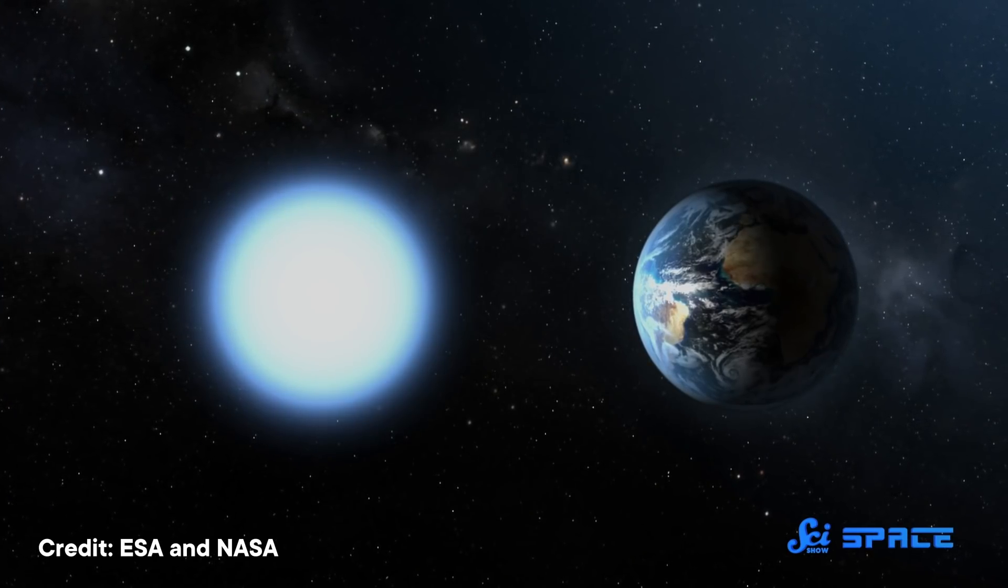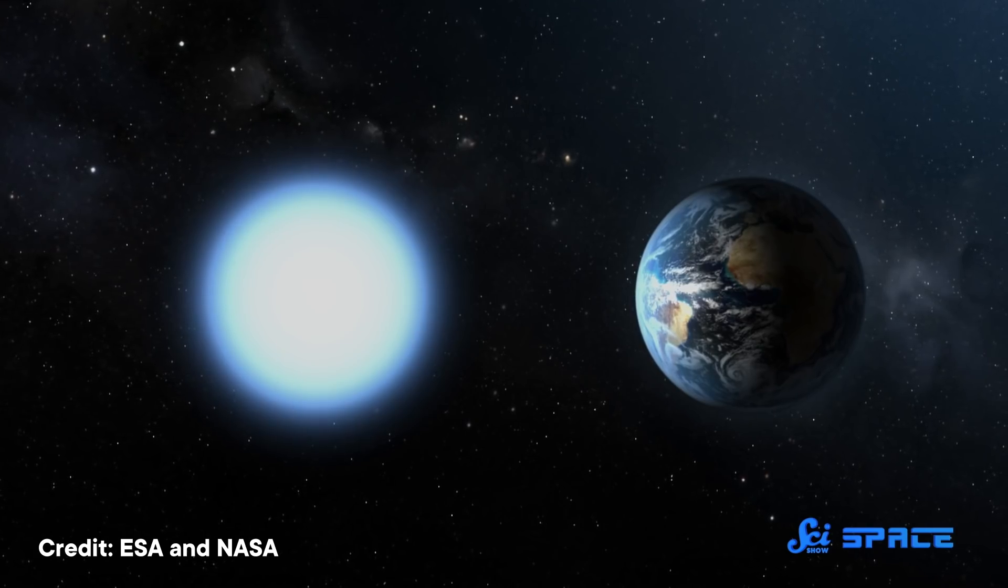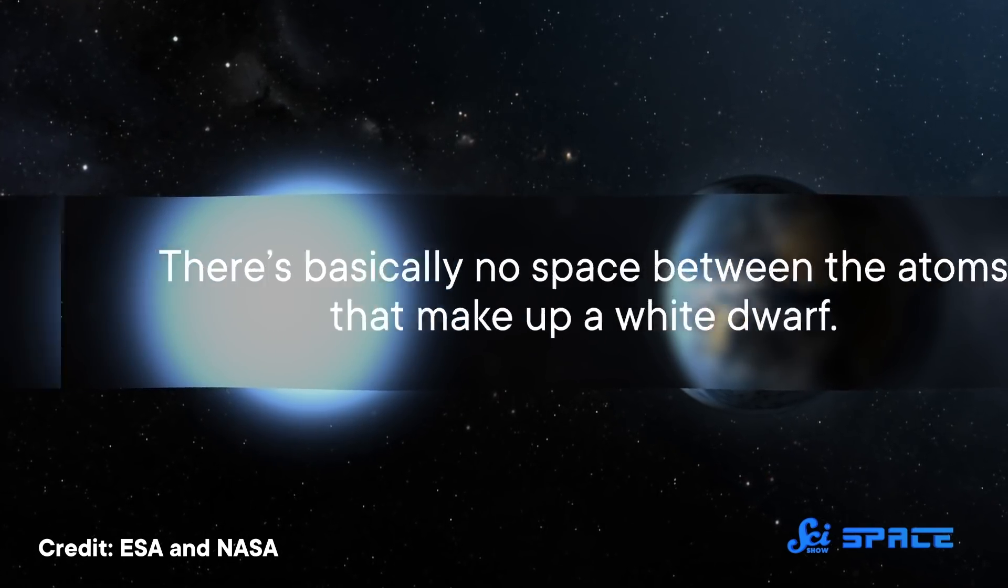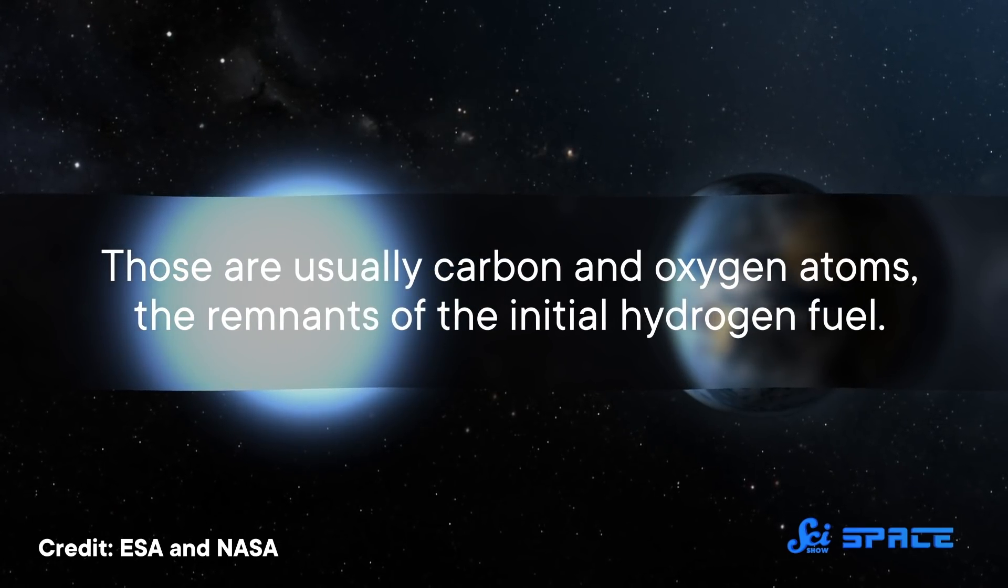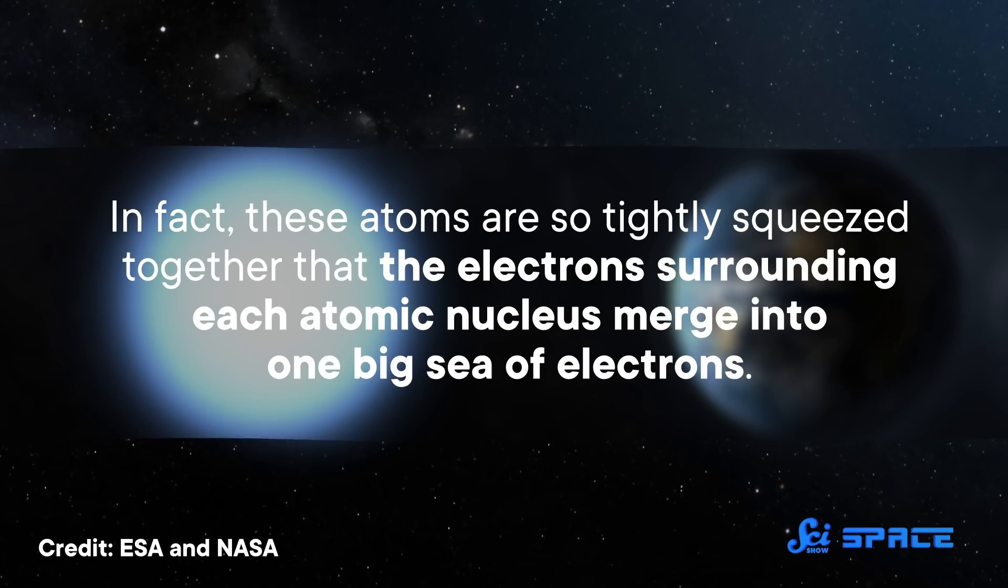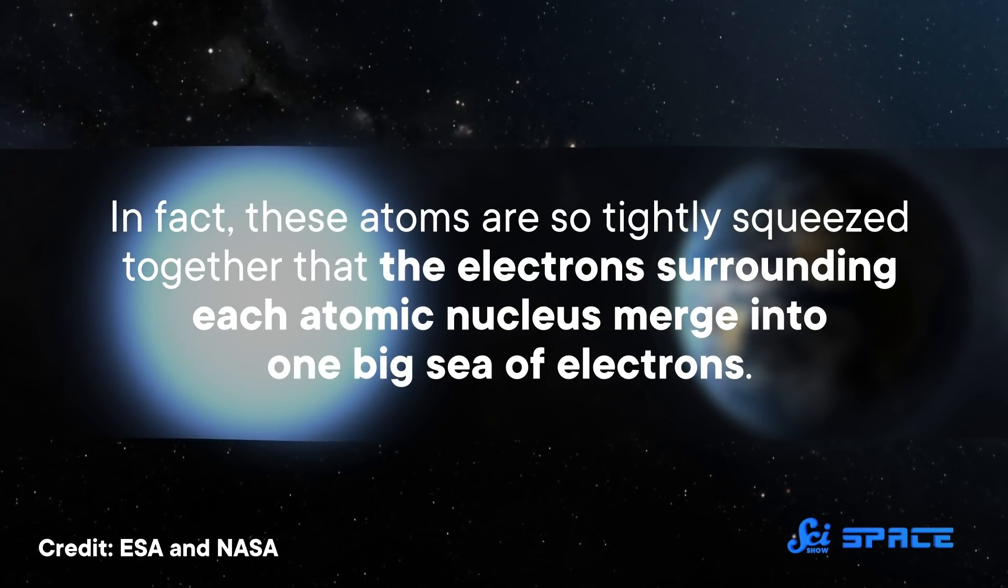White dwarfs are typically about as big as Earth, but they are about as massive as the Sun, which makes them ridiculously dense. There's basically no space between the atoms that make up a white dwarf. Those are usually carbon and oxygen atoms, the remnants of the initial hydrogen fuel. In fact, these atoms are so tightly squeezed together, that the electrons surrounding each atomic nucleus merge into one big sea of electrons. And they leave behind a bunch of naked carbon and oxygen nuclei, which are positively charged.